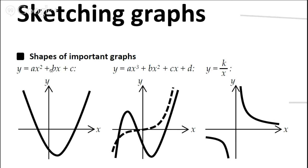They're numbers that don't change, whereas x and y are variables because they produce the various coordinates on this graph. So as x changes, you work out what the expression comes to, and that gives you y. So if x is 1, you get a certain value for y; if x is 2, you get another value for y — it keeps changing.